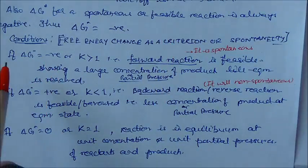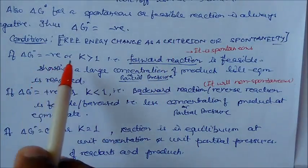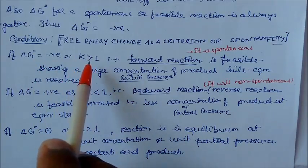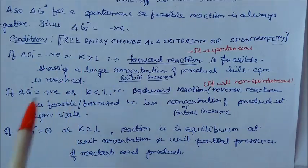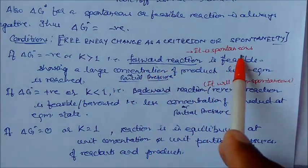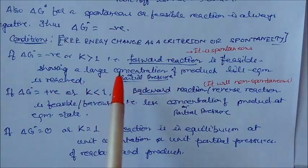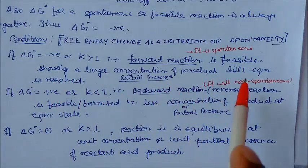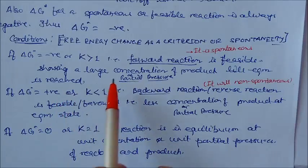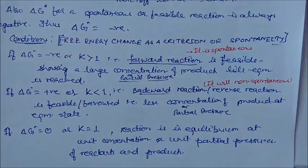The criteria are: if delta G° is negative, then K is greater than 1. This means the reaction proceeds forward, is spontaneous, and shows a large concentration of product until equilibrium is reached. This applies whether we consider concentration or pressure.